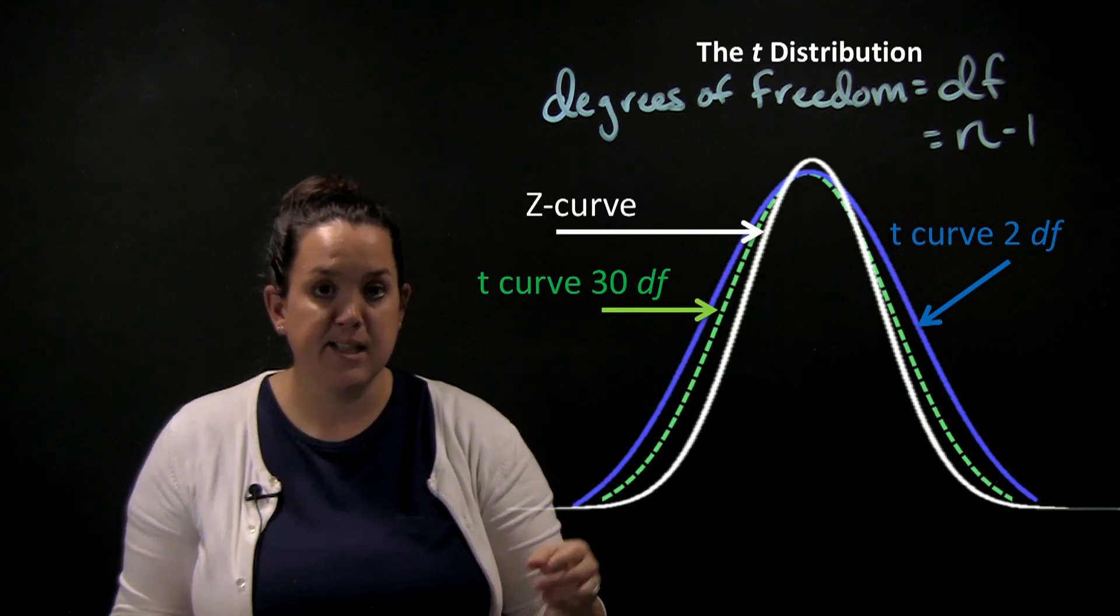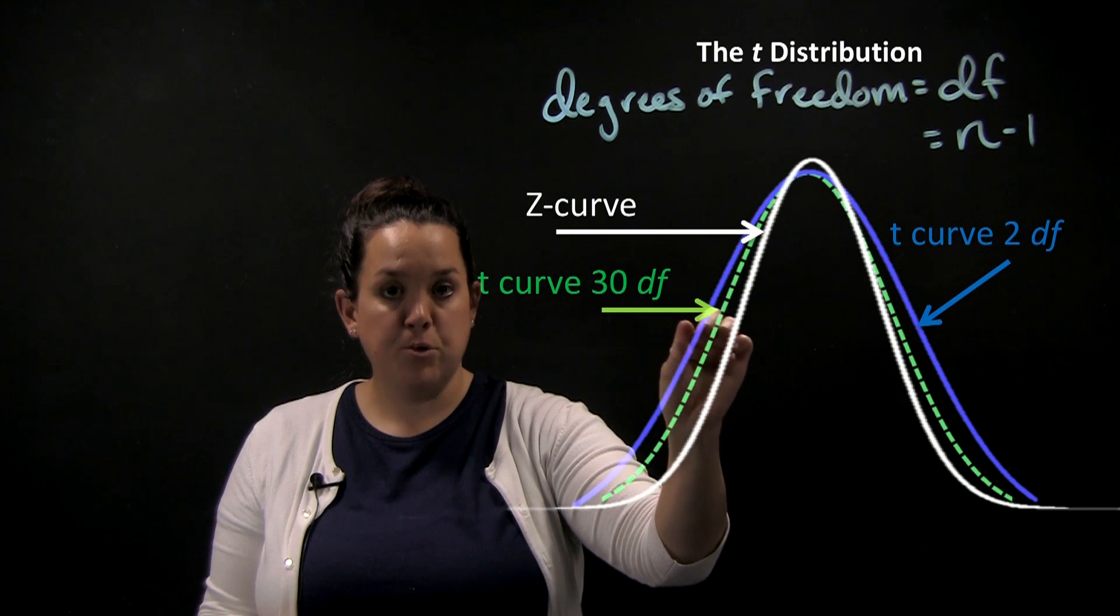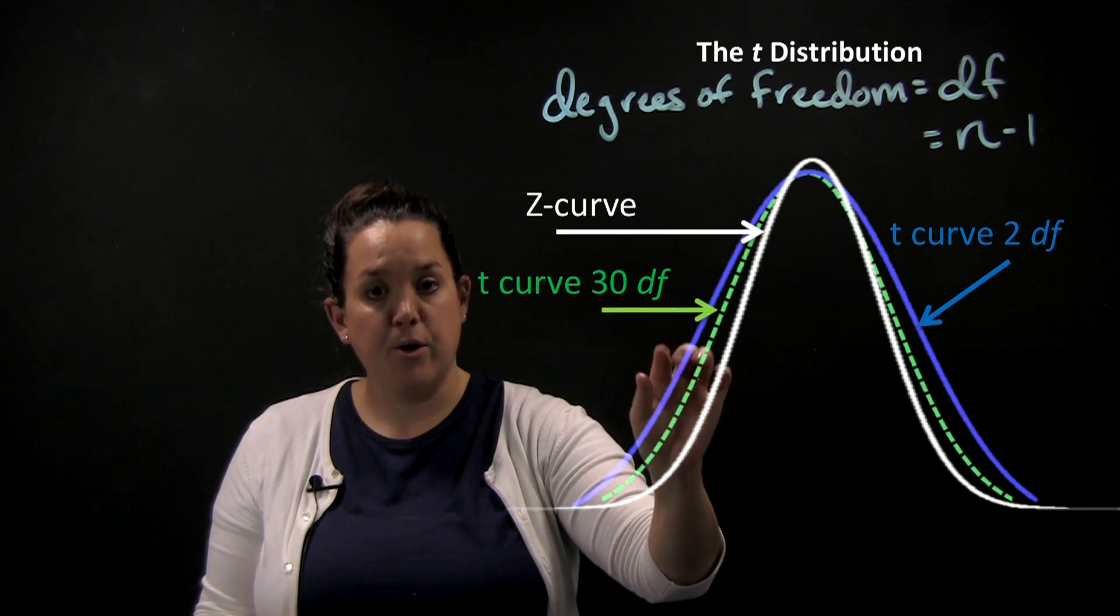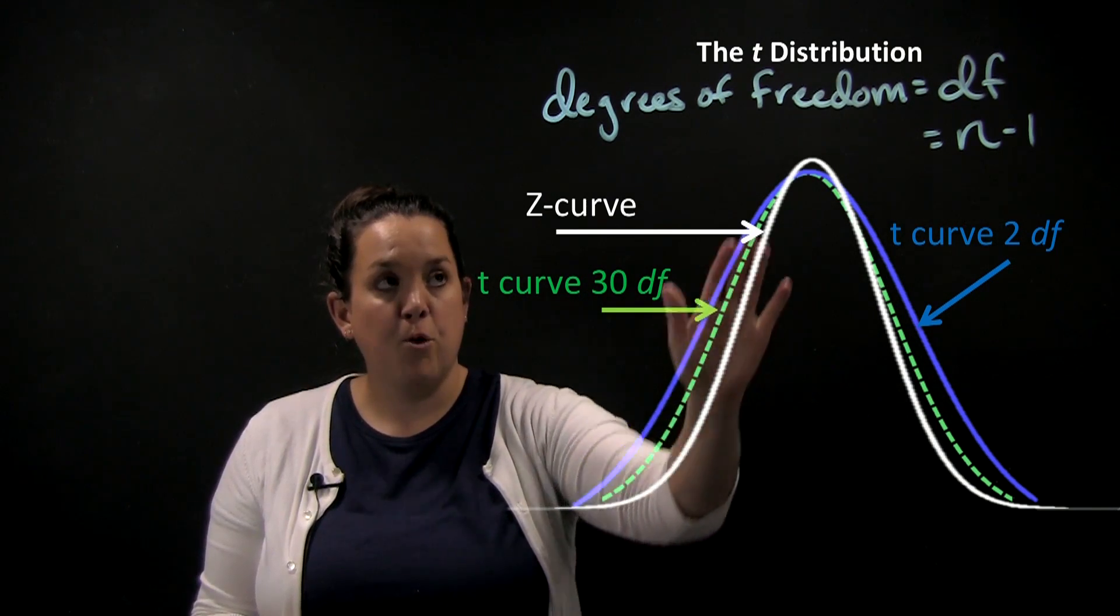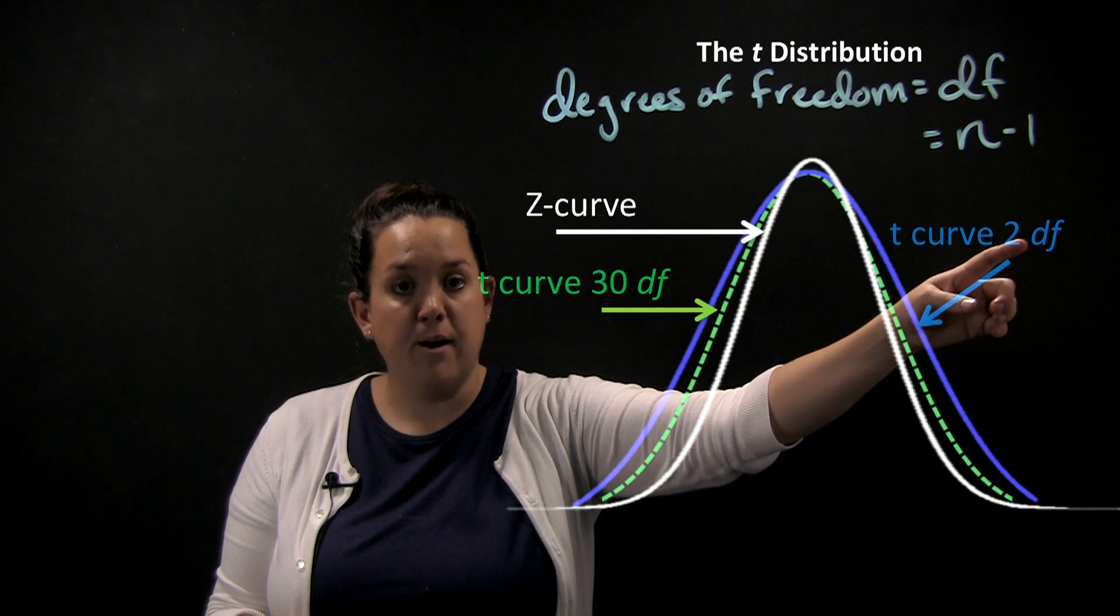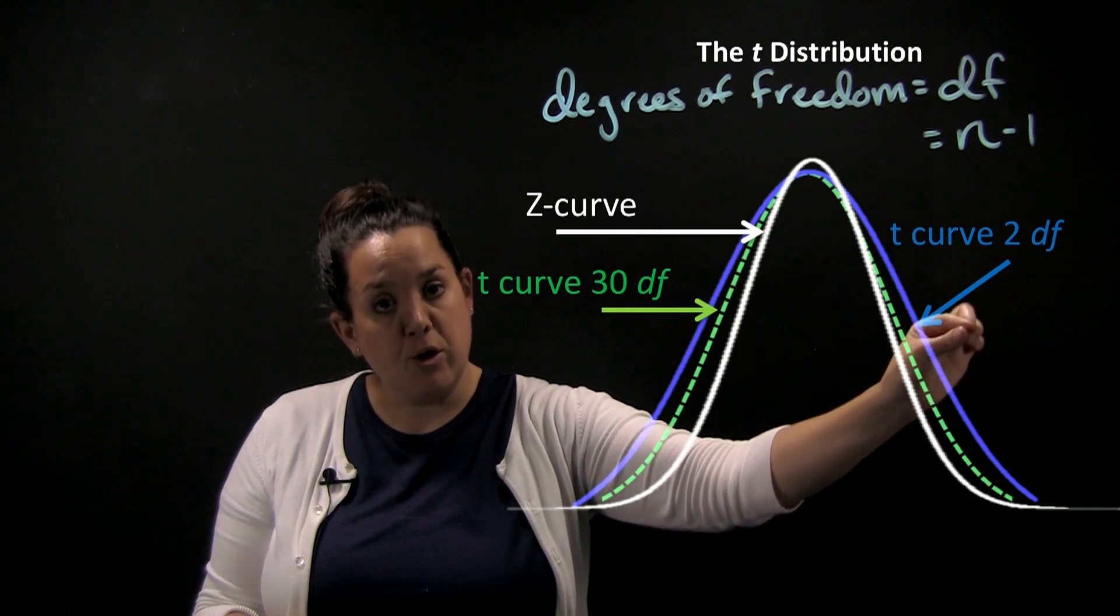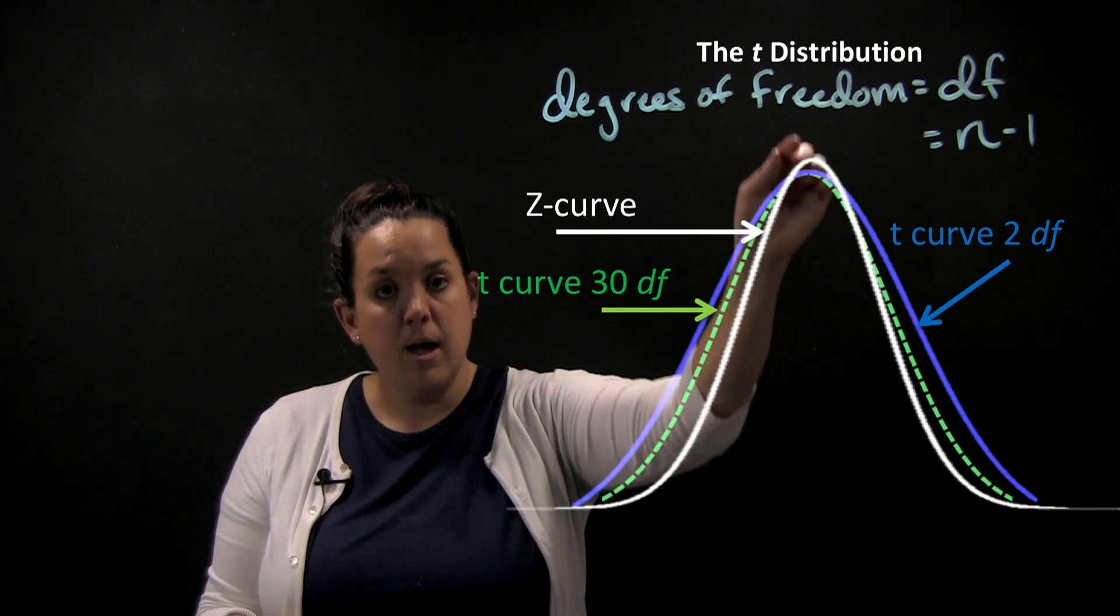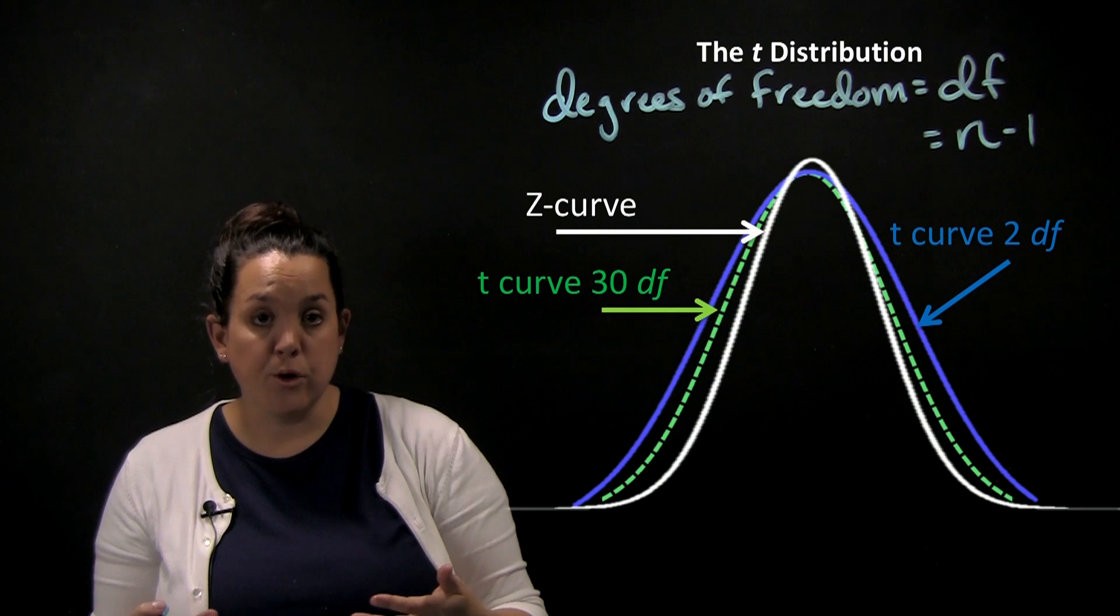One thing to recognize is the higher the degrees of freedom, you can see between the blue and the green curve, the less area that will be represented in the tail, and the more that it will move to the height of the curve. For the blue curve, where we only have 2 degrees of freedom, and then moving into 30 degrees of freedom, we're losing area in the tail, and we should be gaining it in the height of the curve.